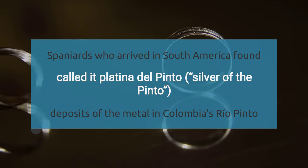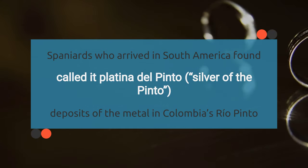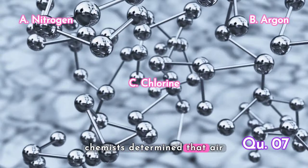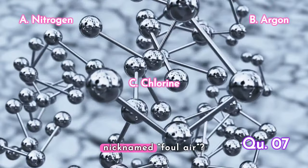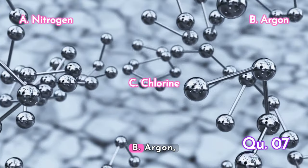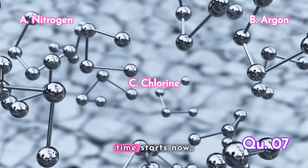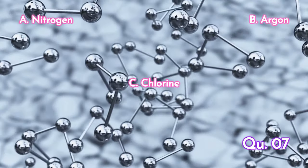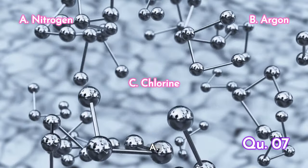Spaniards who arrived in South America found deposits of the metal in Colombia's Rio Pinto and called it Platina del West. Question 7. 18th century chemists determined that air was made up of fire air and foul air. Which element was nicknamed foul air? A, nitrogen. B, argon. C, chlorine. Your time starts now. The answer is A, nitrogen.